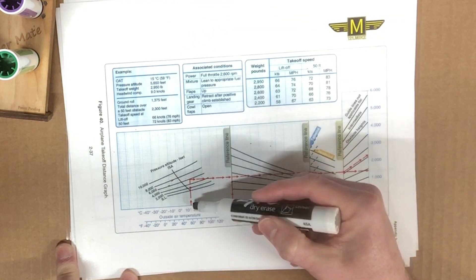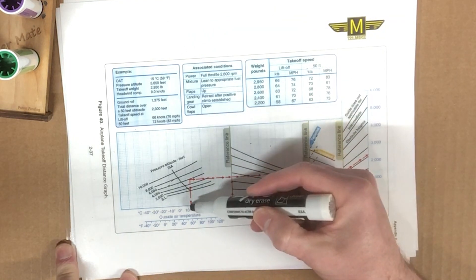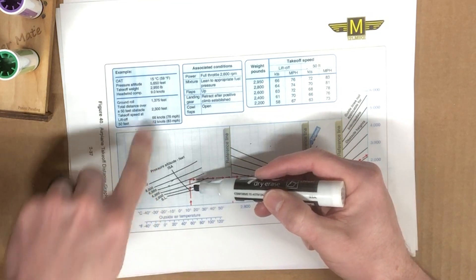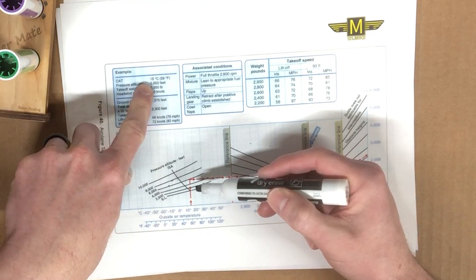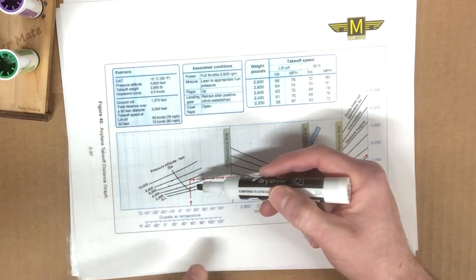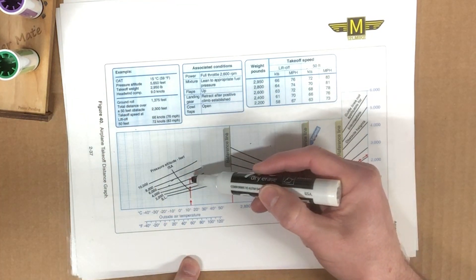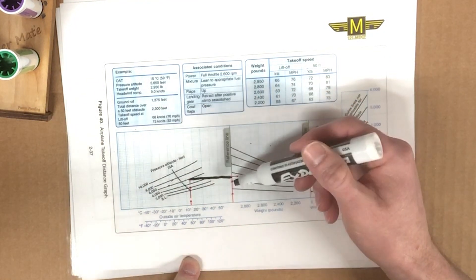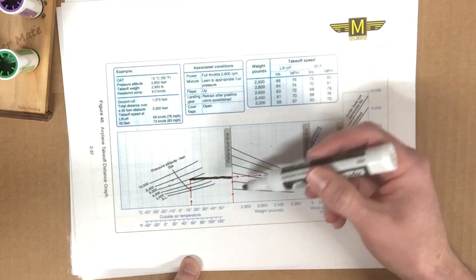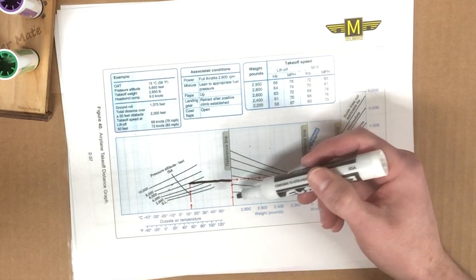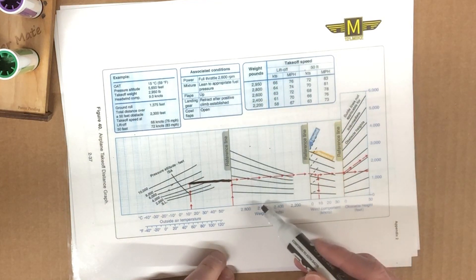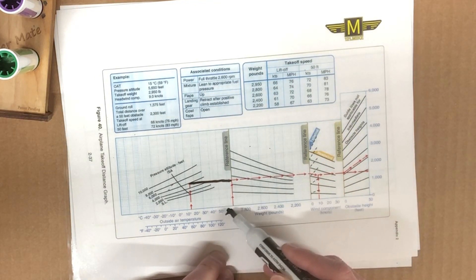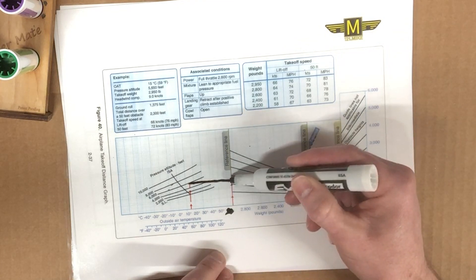The scenario here says that it's 15 degrees Celsius outside, which is a standard day or 59 degrees Fahrenheit. Okay. So we start at the bottom here at 15, halfway between 10 and 20. We come up vertically until we hit our pressure altitude, which the scenario says it's 5,650 feet, which of course is just short of the 6,000 line. Then they have us coming out here to the right, to this reference line to get over into the weight.